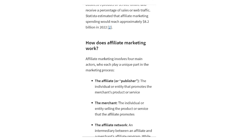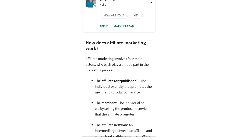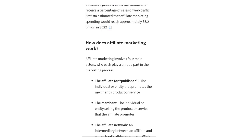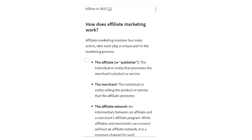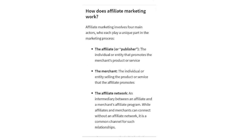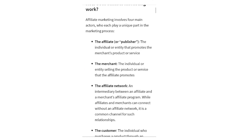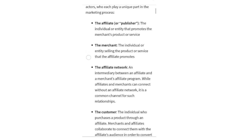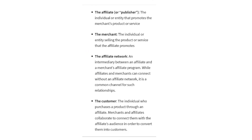How does affiliate marketing work? Affiliate marketing involves four main actors who each play a unique part in the marketing process: the affiliate or publisher — the individual or entity that promotes the merchant's product or service; the merchant — the individual or entity selling the product or service that the affiliate promotes; and the affiliate network — an intermediary between the affiliate and the merchant.